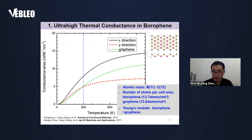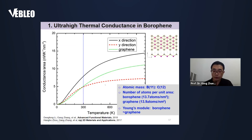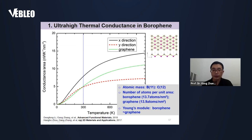Graphene has very high thermal conductance, but in borophene the thermal conductance is even much higher than graphene. Usually, we use the atomic mass and the number of atoms per unit area, and the inter-atomic stiffness as the dominant factors to explain thermal conductance. However, in borophene, the atomic mass is comparable with carbon, the number of atoms per unit area is even smaller than graphene, and the Young's modulus is also comparable with graphene. So these three factors cannot explain the high thermal conductance in borophene — there must be some new physics.